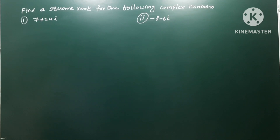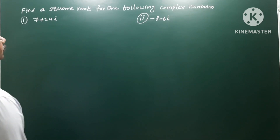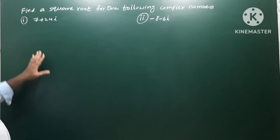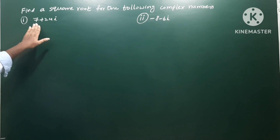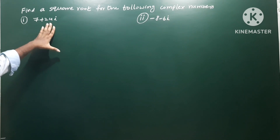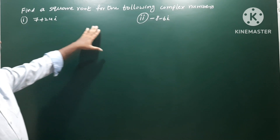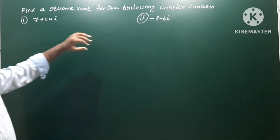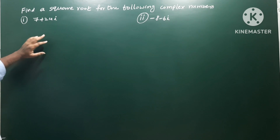Okay, next problem. Find the square root for the following complex numbers. First one: 7 plus 24i. Second one: minus 8 minus 6i. Find the square root.